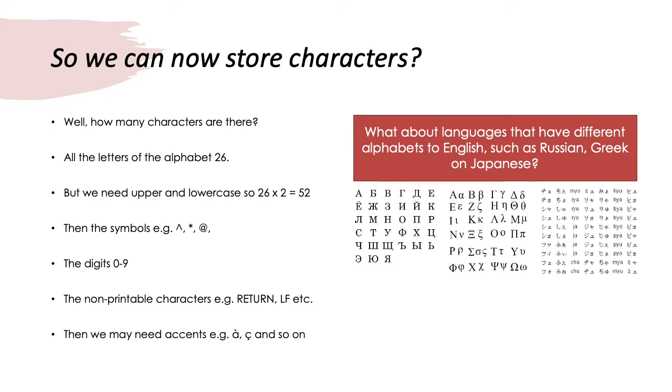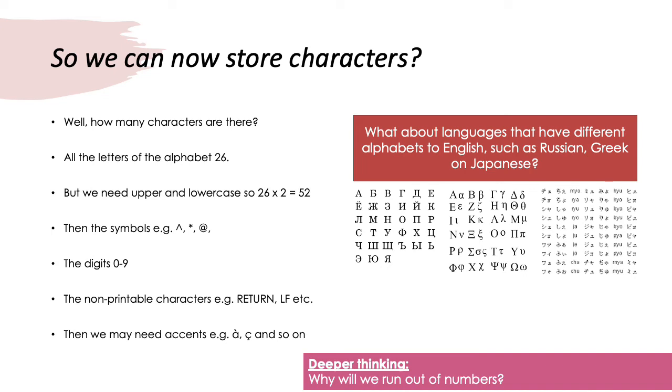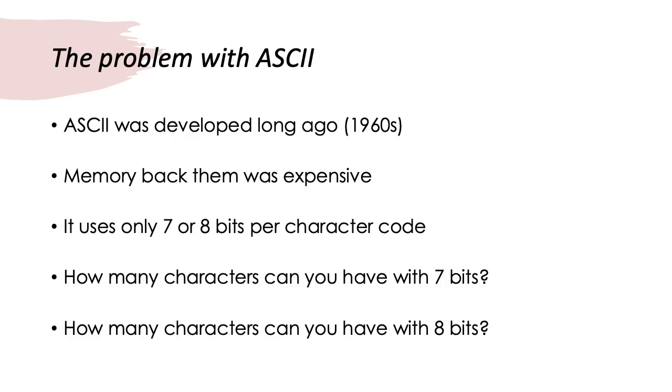These languages have their own different alphabets. And each of these characters in these alphabets would need their own different unique codes. So, the deeper question is, why will we run out of numbers? What is the problem with ASCII as we've looked at it so far?